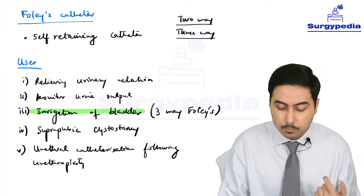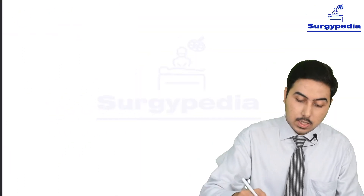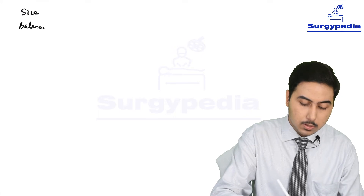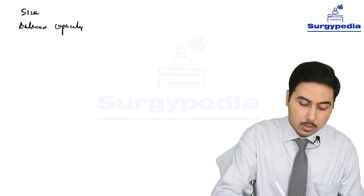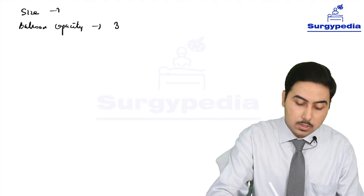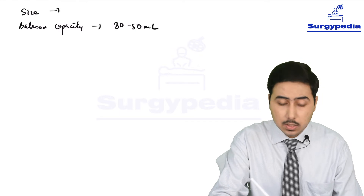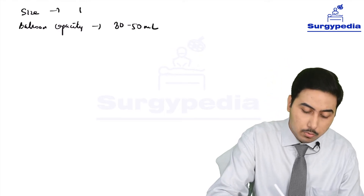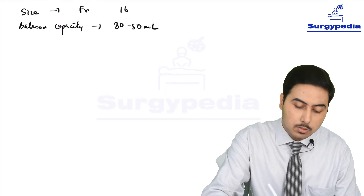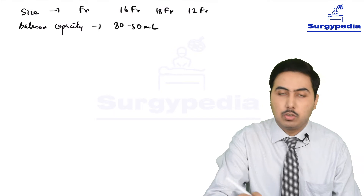Two other things you need to know about Foley's catheter: the size and the balloon capacity. The balloon capacity is mentioned on the pack — it is usually 30 to 50 ml. The size is also mentioned on the pack and is given in French units, written as FR. So it can be 16 French, 18 French, 12 French, and so on. There is also a color coding on the side channel, but you don't need to remember that.